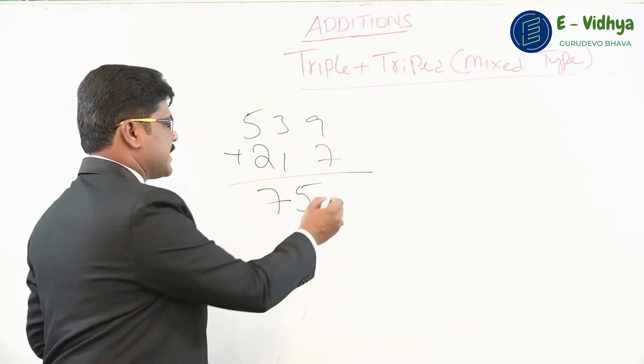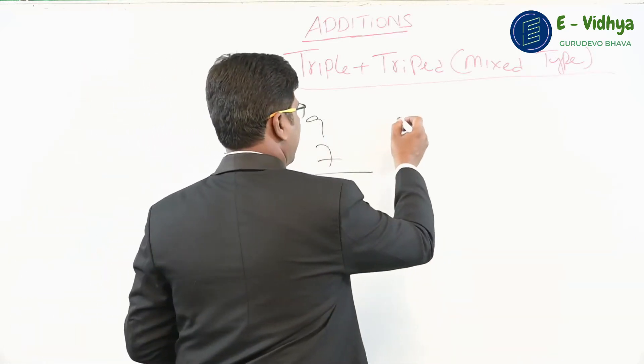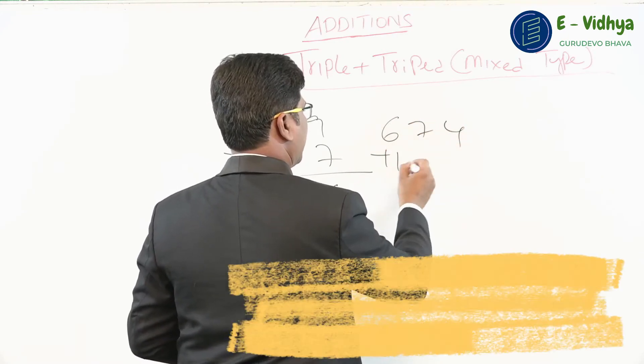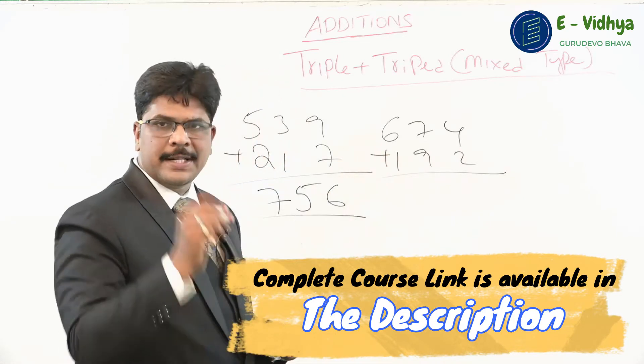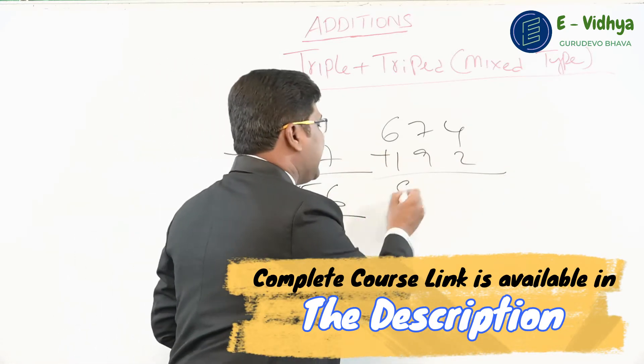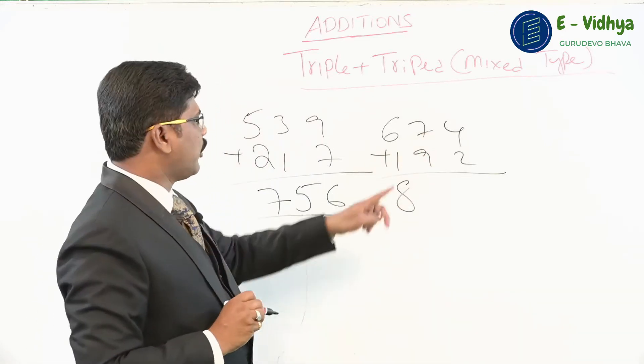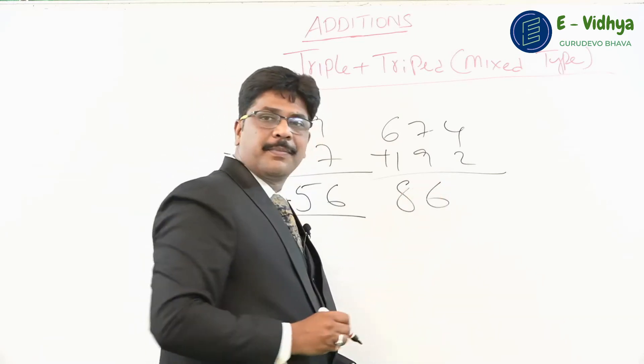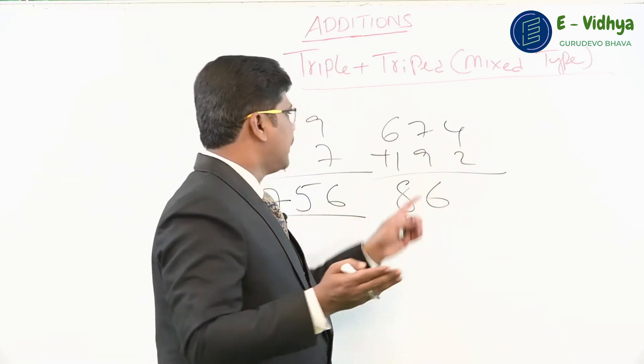Think of the number 9 and 7, you get 6. The answer is 756. Let's see one more example: 674 added to 192. Add 6 plus 1, you get 7, but write 8 because the next place there is a carry number. Think of the number 7 and 9, you get 6. Write 6 only because the next place is a non-carry number.